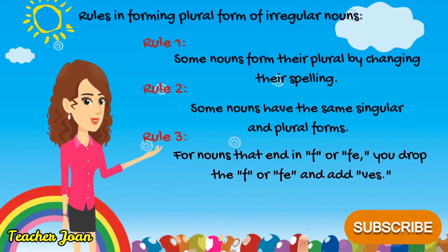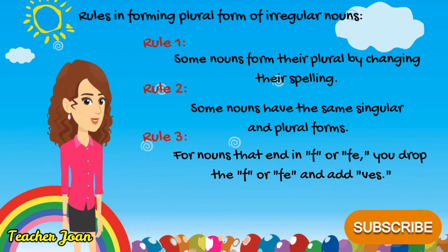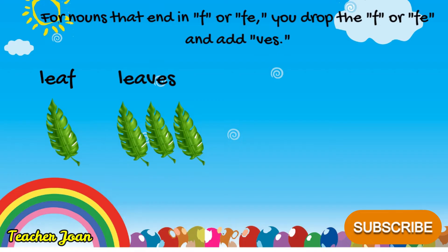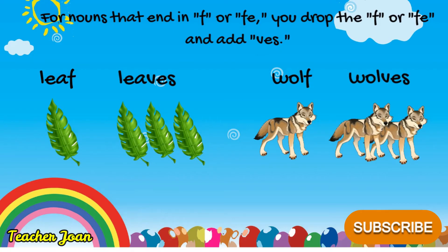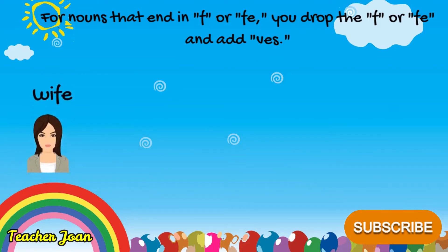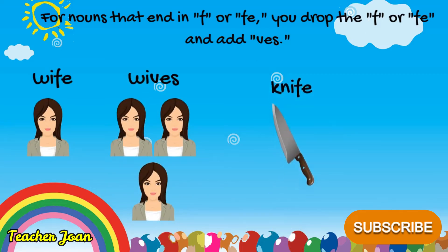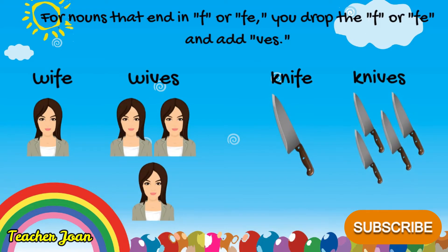For nouns that end in F or FE, you drop the F or FE and add VES. For example: Leaf — Leaves, Wolf — Wolves, Wife — Wives, Knife — Knives.